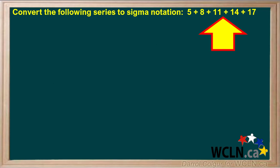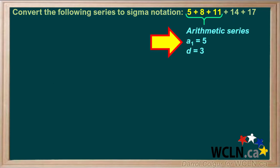We're asked to convert the given series to sigma notation. Looking at the first three terms, we see that this is an arithmetic series in which a1 equals 5 and d equals 3. Looking at all the terms, we see we have five terms in this series.